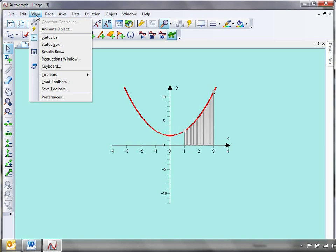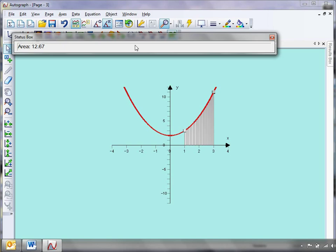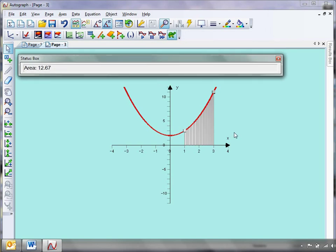If you just select it and if you just go down to view status box, then that will keep a track of the area. And I think that comes out exactly to 12 and two thirds.